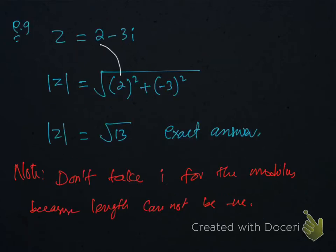If we need modulus z when z is 2 minus 3i, then we can get the modulus z as 2 square plus minus 3 whole square and under root. And give the answer in exact form. And this is very important. Don't take i for the modulus because length cannot be negative.